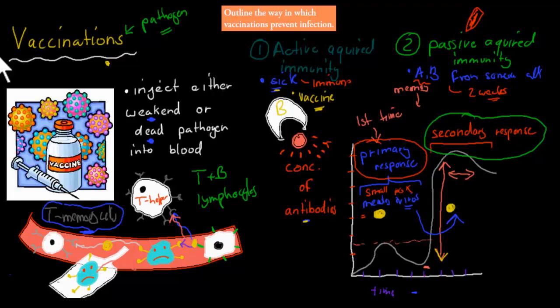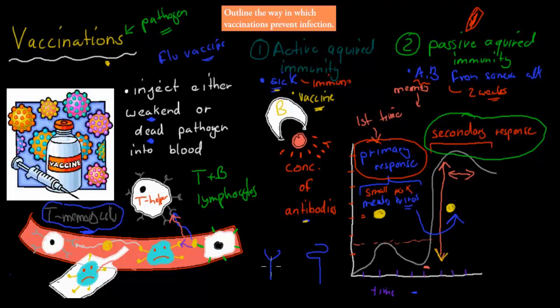One thing to note: the flu virus mutates so fast that the flu vaccine won't last your lifetime — it might last a year, because next year's flu may have a different receptor. Your memory cells won't detect the new receptor. That's why flu is hard to get rid of. Whereas something like polio or smallpox stays constant, so once you get a vaccine against smallpox, you'll usually be immune for life.